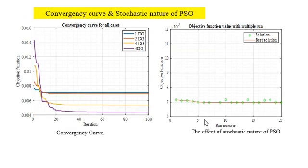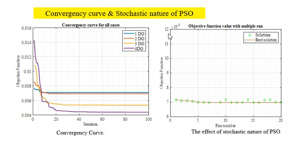Here are the convergence curve and the stochastic nature of the PSO algorithm. The first diagram shows the convergence curve for 1 up to 4 DG cases. The stochastic nature is analyzed over multiple runs, with the objective value on the y-axis. For different numbers of runs, the objective values are almost similar, confirming PSO stability.